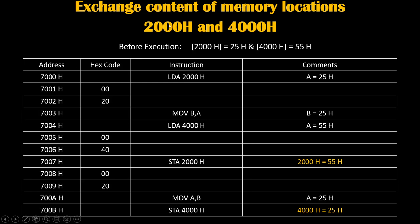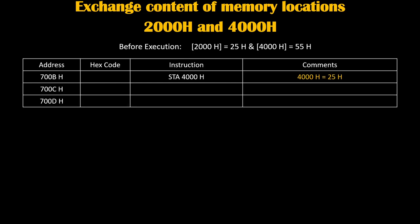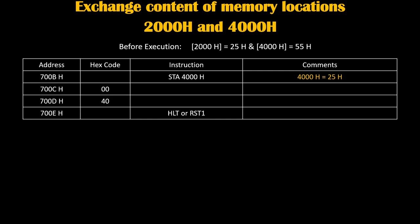Our program is done. Initially 2000h was holding 25h, but right now 2000h is holding 55h. And initially 4000h was holding 55h, but now 4000h is holding 25h. STA 4000h is a 3-byte instruction, so it will take 3 memory locations: 700Bh, 700Ch, and 700Dh. We will write the hex code for STA, and 4000h we will write in reverse order as 00 and 40. Then we will terminate our program by writing instruction HLT or RST 1, which will stop the program. After execution, 2000h will become 55h and 4000h will become 25h.